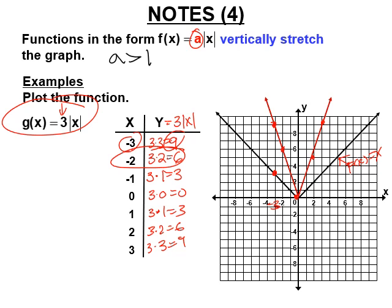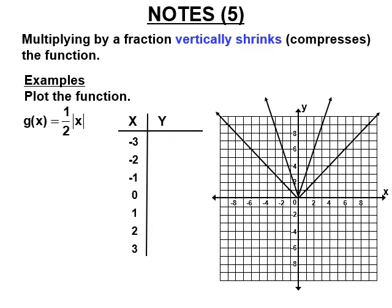That's the vertical stretch of the absolute value of x — we multiplied it by three. When we multiply by a number greater than one it stretches; when we multiply by a fraction, it shrinks. We already did f(x) = |x| and 3|x|, so now we'll shrink it using a different color.